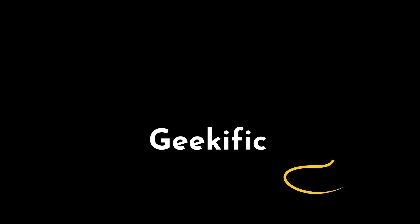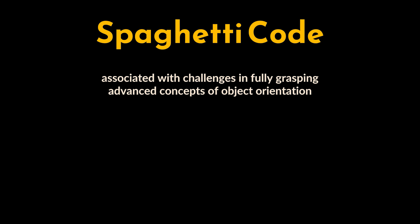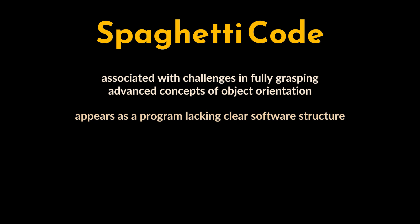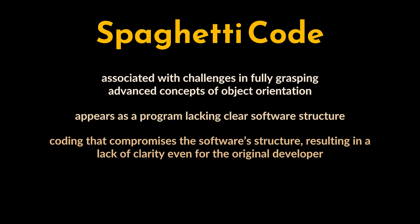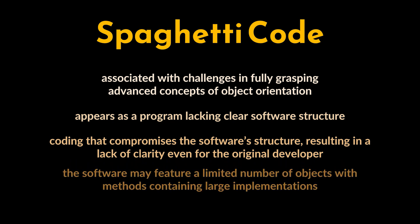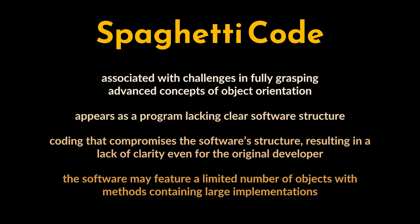What's up geeks and welcome to the channel. The spaghetti code anti-pattern is a well-known and famous issue in programming, existing in various forms since the invention of programming languages. It is particularly associated with challenges in fully grasping advanced concepts of object orientation. In its general form, spaghetti code appears as a program lacking clear software structure. When using an object-oriented language, the software may feature a limited number of objects with methods containing large implementations.